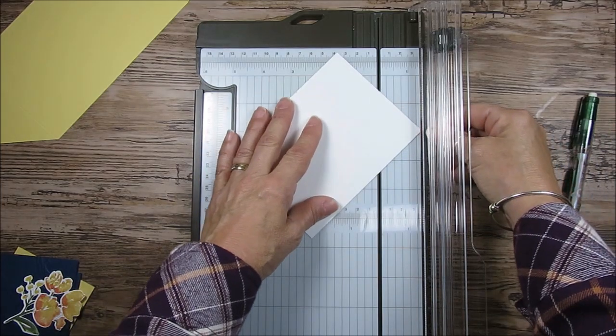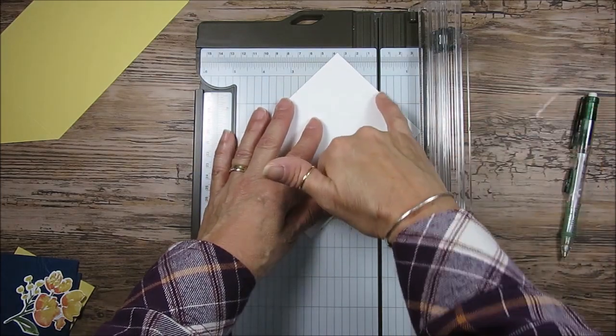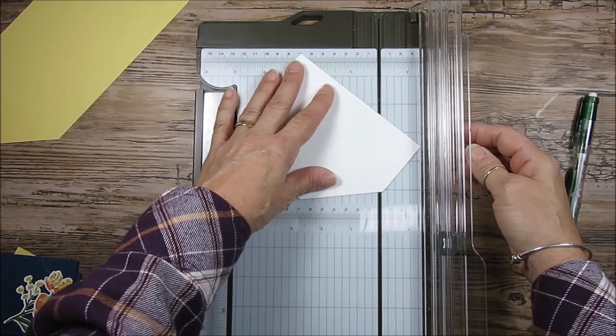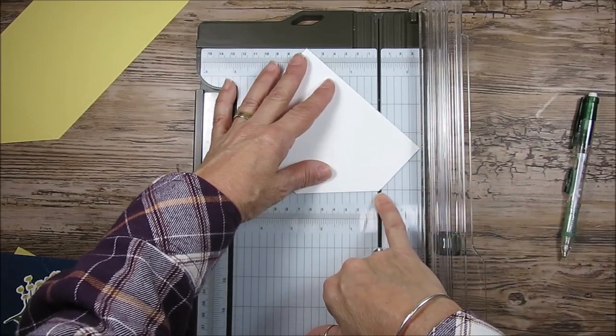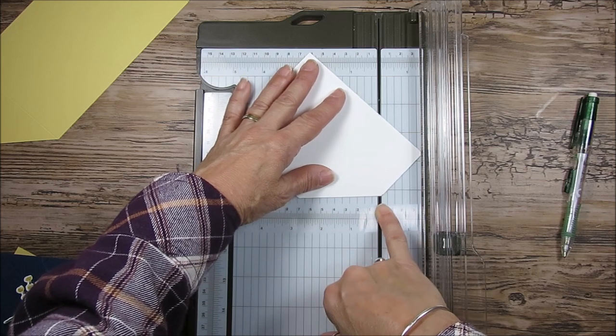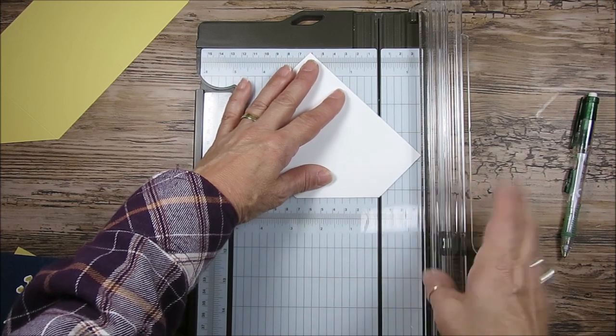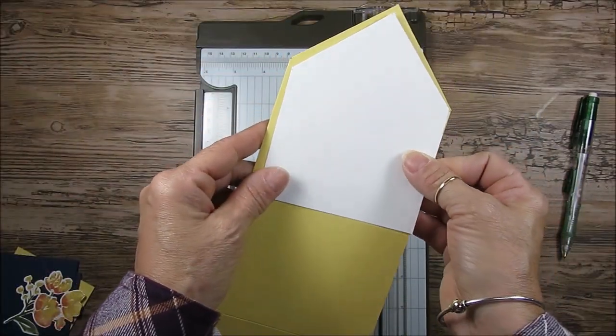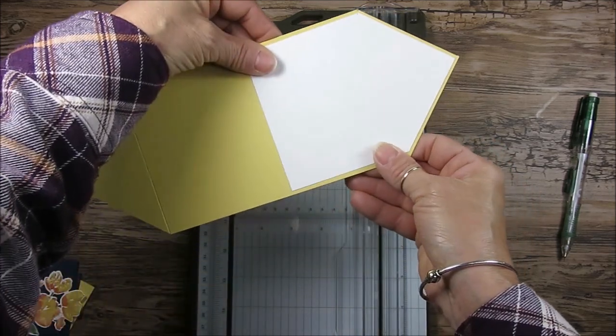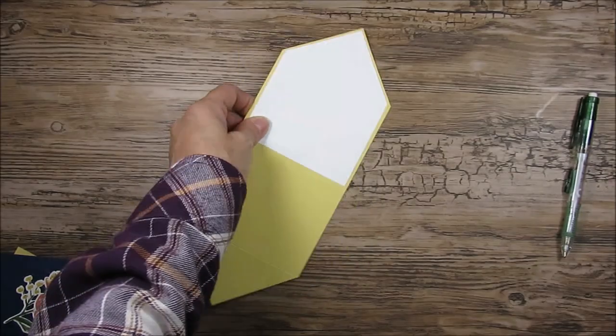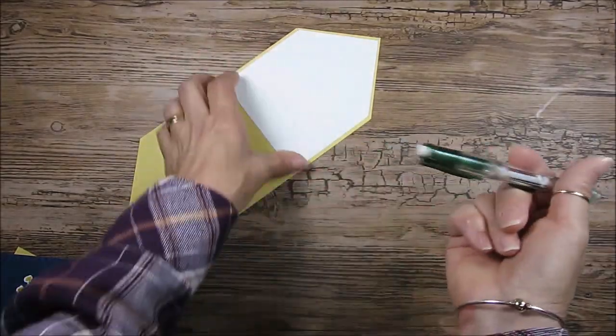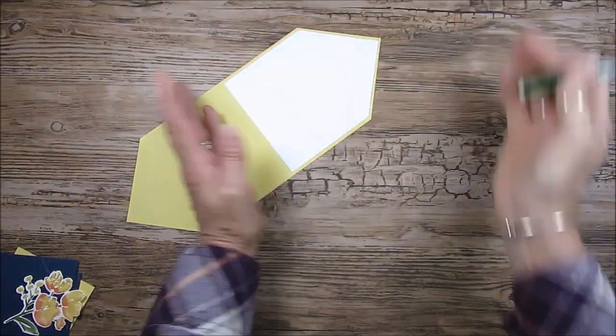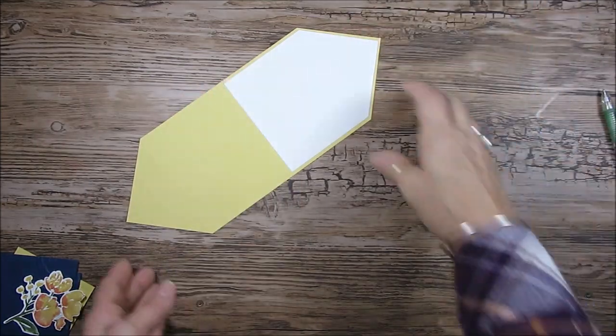Now we're going to do the same thing we did with the card base. We're going to put the point in the track and cut, flip it around and again the mark in the track and cut. Voila. Now we got our perfect insert to go inside our card. The reason why I say to use a pencil is because you can remove those marks. So now it doesn't look funky.